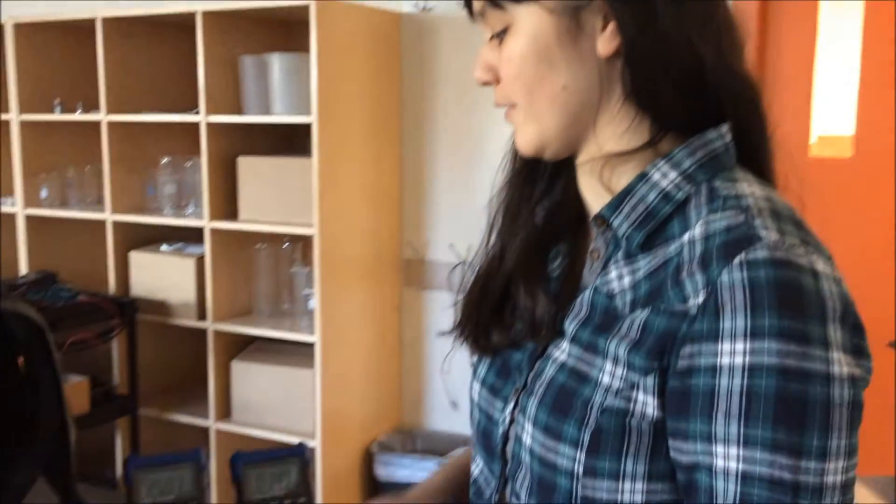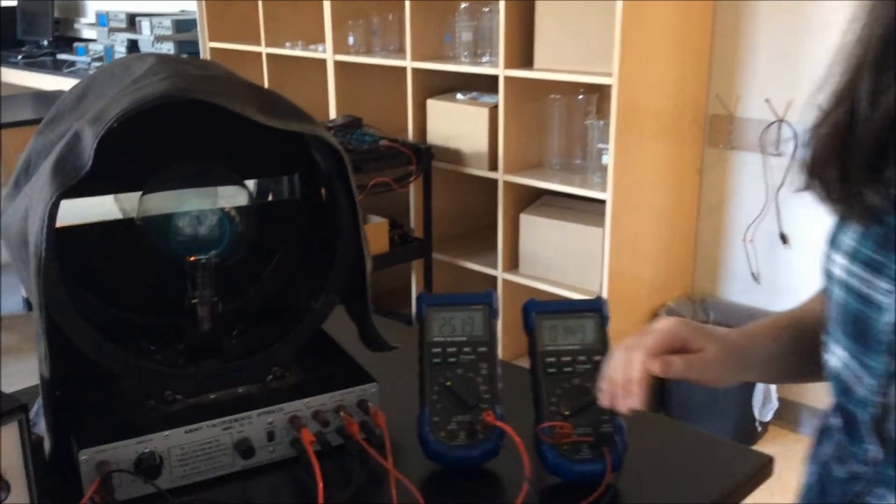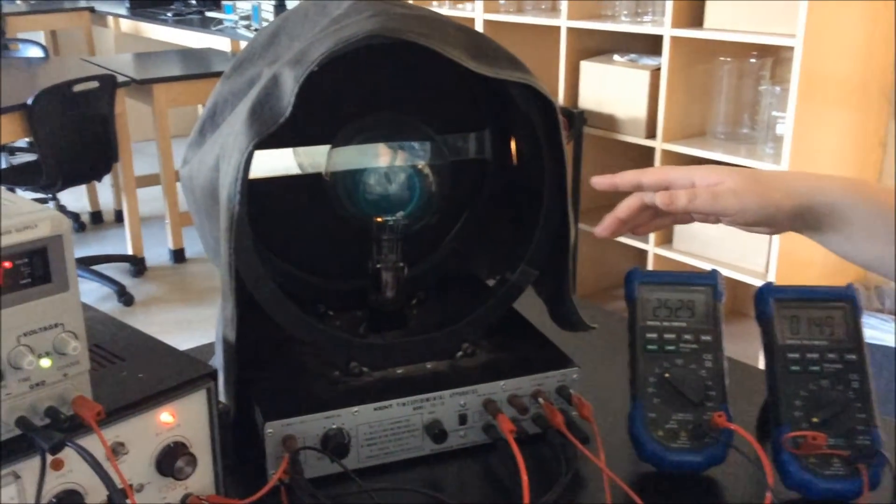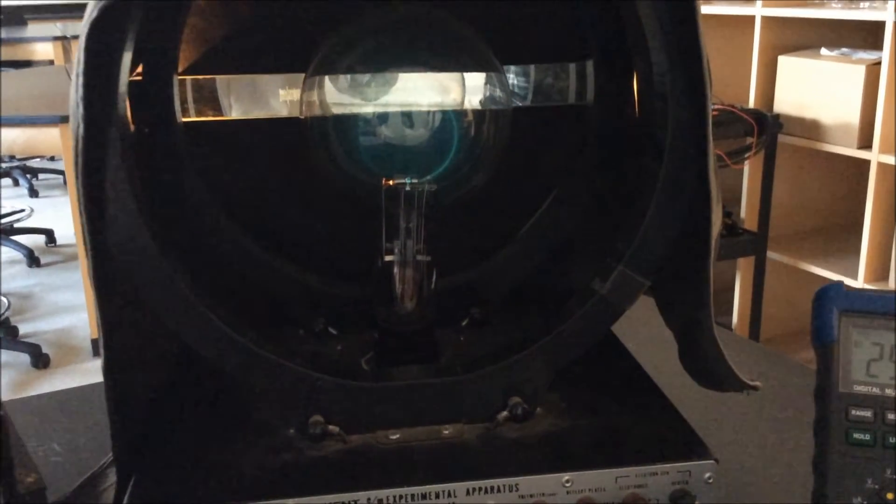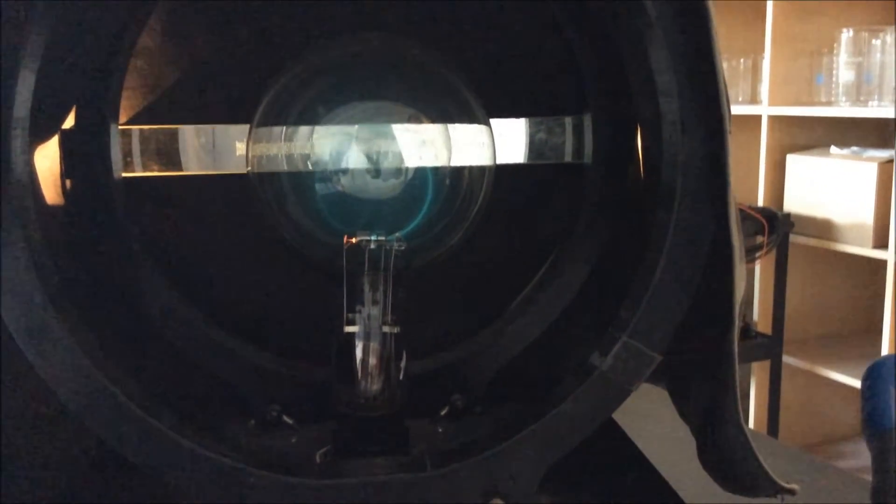I'm going to set the voltmeter so that it reads about 110 volts. At 110 volts, it produces this electron path. What you want to do is find the radius of this electron path. To be more accurate, you're going to first find the diameter and then divide by two. You're going to look at the two ends of the electron path circle and match it up with the image on the back mirror. Then take the reading of the diameter and divide by two to find the radius.